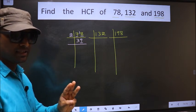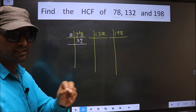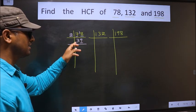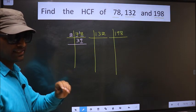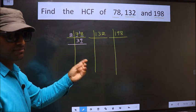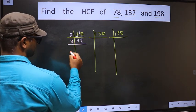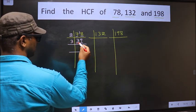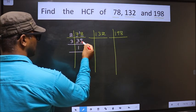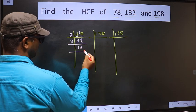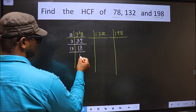Next, prime number 3. To check divisibility by 3, we add the digits: 3 plus 9 is 12. Is 12 divisible by 3? Yes. So this number is also divisible by 3, so we take 3. The first number is 3; 3 once is 3. The other number is 9; 3 threes are 9. Now we have 13. 13 is a prime number, so 13×1 is 13.